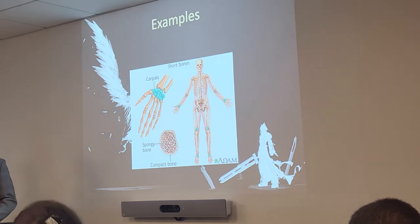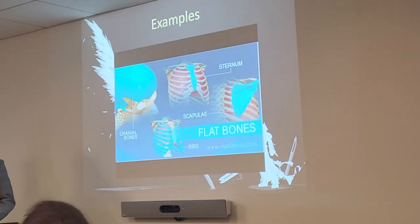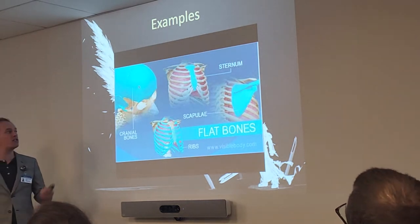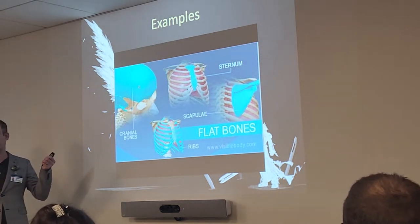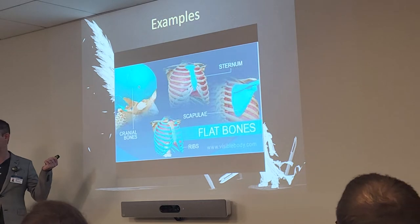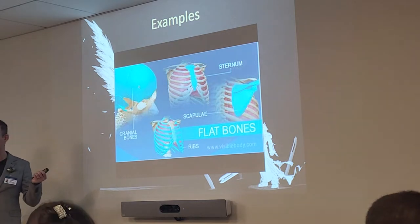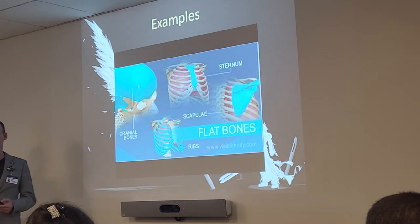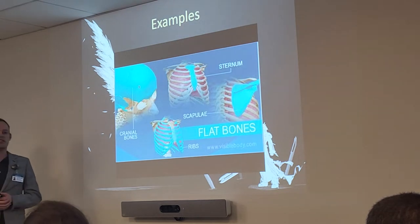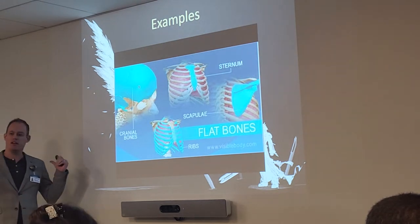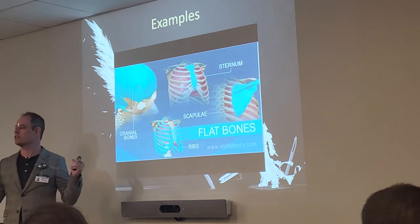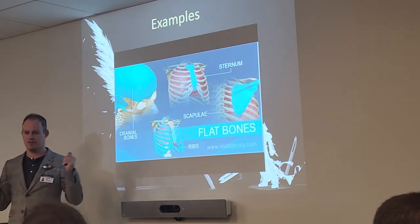Here are some more flat bone examples up close. There's the calvarium, or cranial bones — very flat and rounded in nature. The sternum in the front, the ribs, and then the scapulae on the back of your shoulders, your shoulder blades. We're not going to say shoulder blades — we're going to say scapulae.